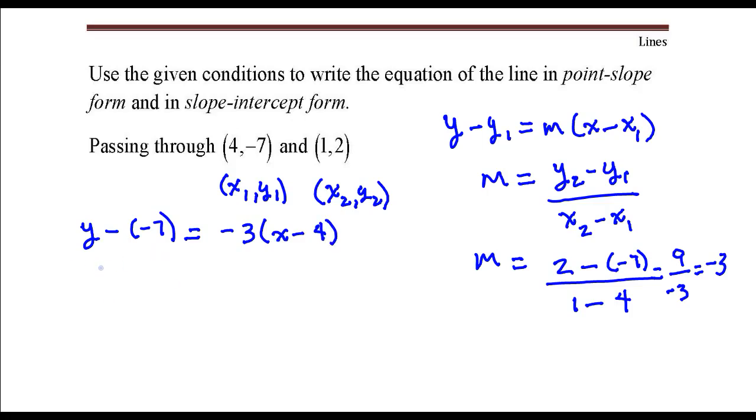Okay, so let me just rewrite this, clean this up a little bit. This is going to be y plus 7 equals negative 3 times x minus 4. And that's it, that's point-slope form.